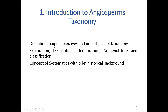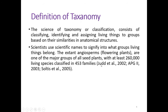Under the first chapter, Introduction to Angiosperm Taxonomy, we have to see definition, scope, objectives and importance of taxonomy, exploration, description, identification, nomenclature and classification, and lastly the concept of systematics with brief historical background. Plant taxonomy is the fundamental branch of botany. It is a science by which biologists classify and organize the vast diversity of living things on this planet, and gives us an understanding of the evolutionary relationships between them. Taxonomy is the theory and practice of classifying organisms.